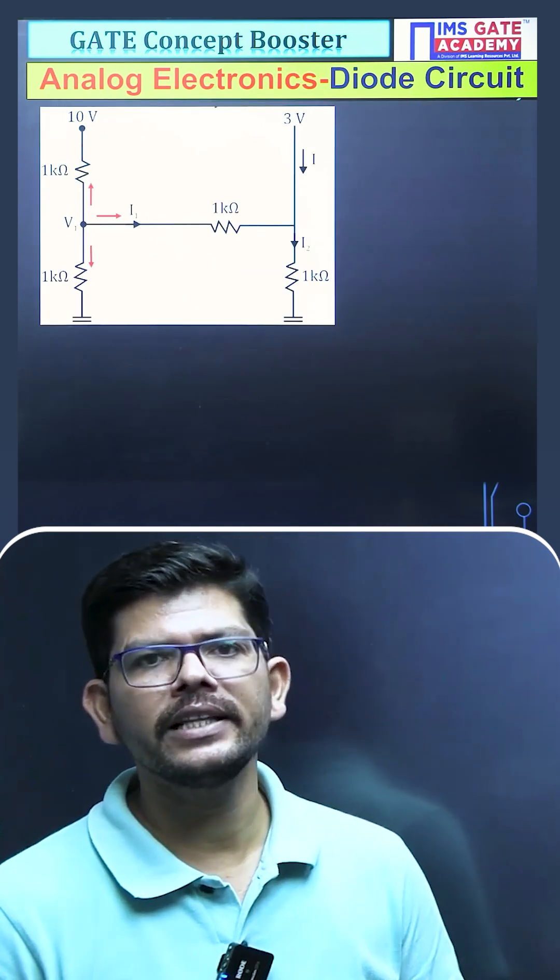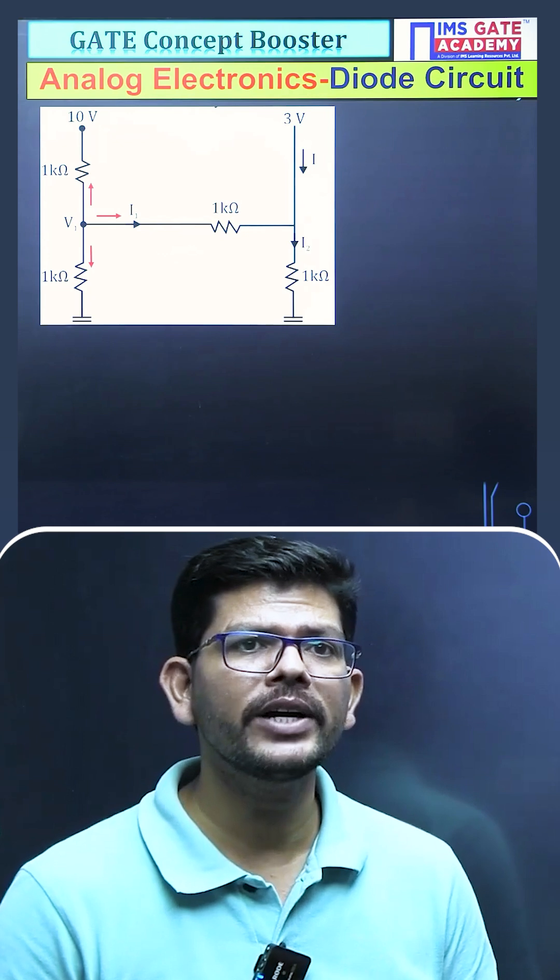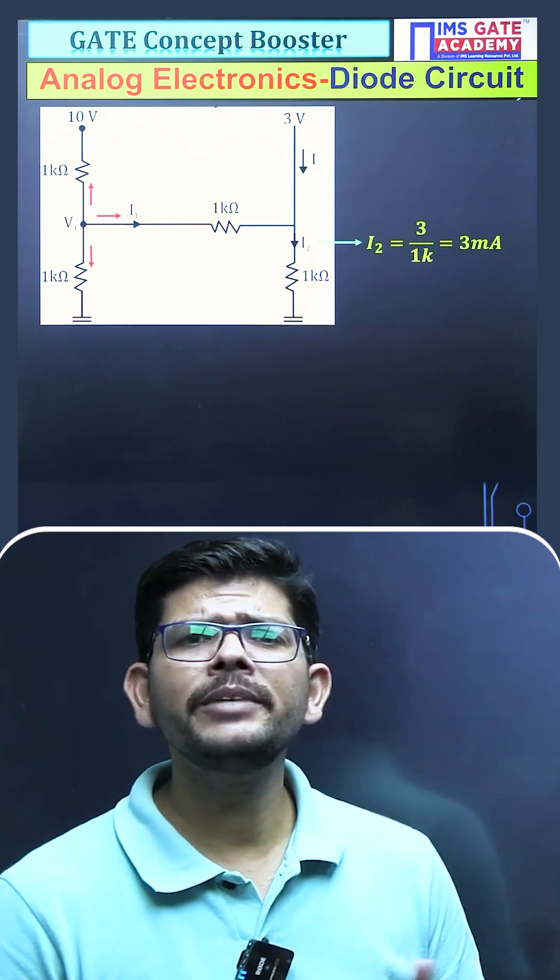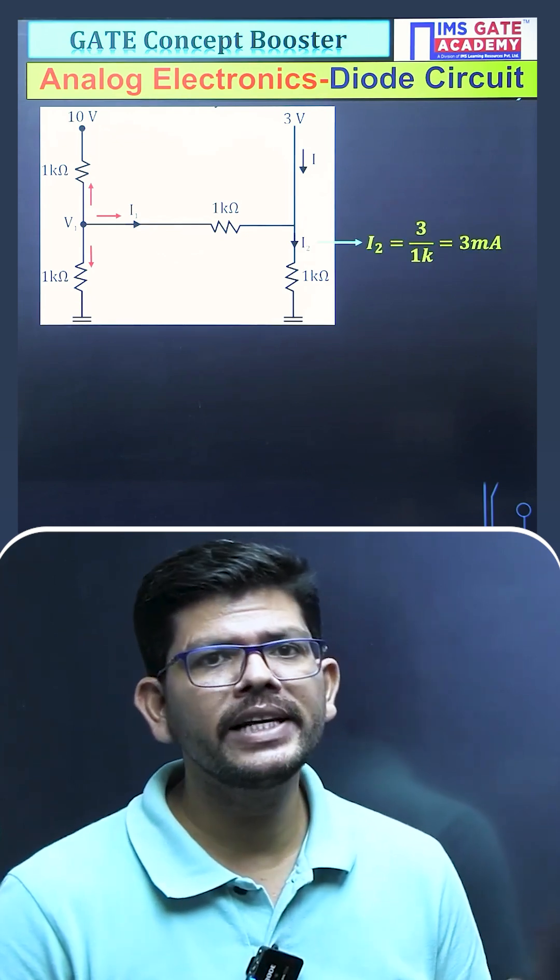After that, the circuit will look like this when both the diodes will be on, in which you can find the current I2 easily, which will be simply voltage divided by resistance and you will get 3mA.